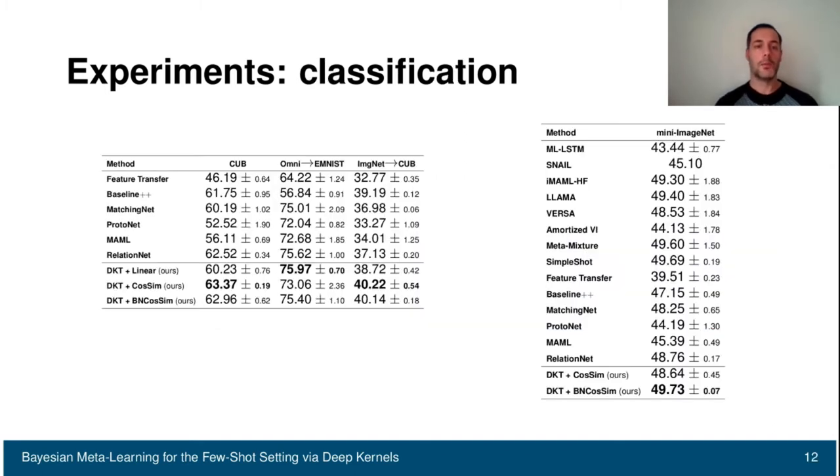For the classification case, we compare our method against many others, including MAML, Bayesian methods, and feature transfer methods. As you can see, we have the highest accuracy across all benchmarks. In particular, we tested on CUB, MiniImageNet, and cross-domain settings like from Omniglot to EMNIST and from MiniImageNet to CUB.